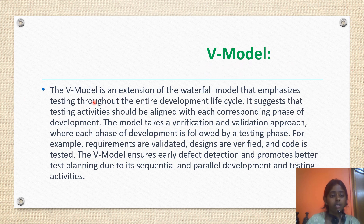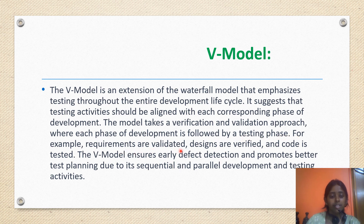The V model is an extension of the waterfall model that emphasizes testing throughout the entire development life cycle. It suggests that testing activities should be aligned with each corresponding phase of development. The model takes a verification and validation approach where each phase of development is followed by a testing phase. For example, requirements are validated, designs are verified, and code is tested. The V model ensures early defect detection and promotes better test planning due to its sequential and parallel development and testing activities.